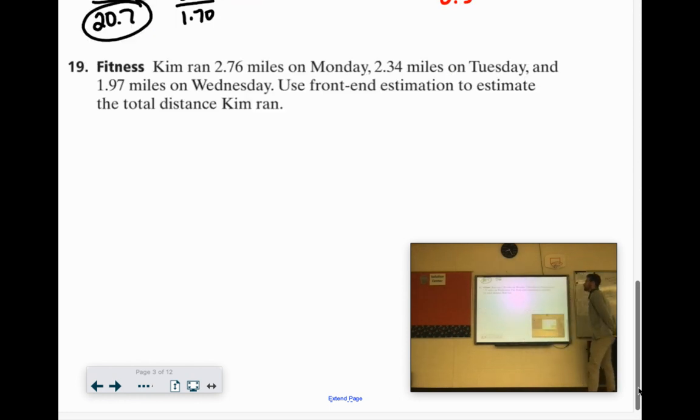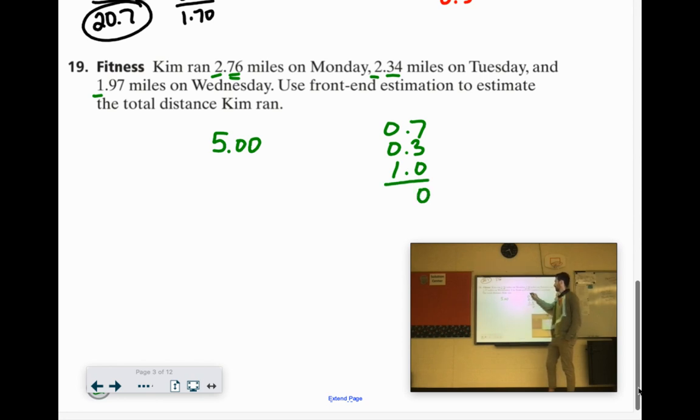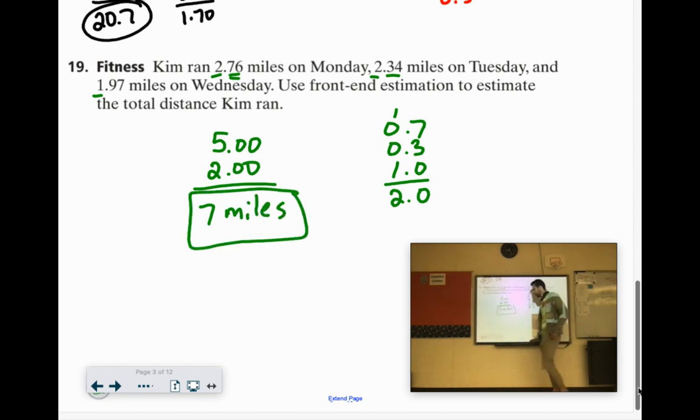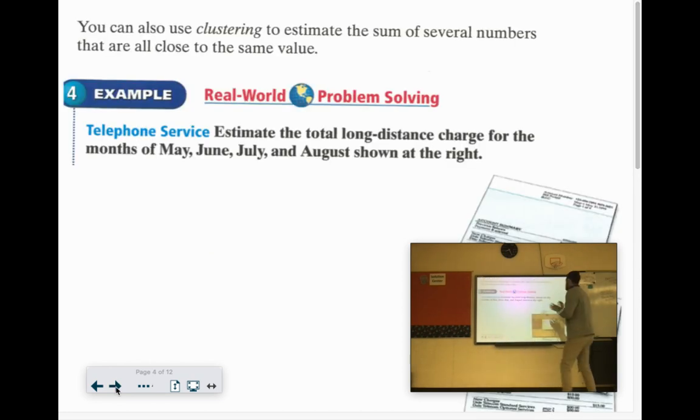The word problem. Kim ran 2.76 miles on Monday, 2.34 miles on Tuesday, and 1.97 miles on Wednesday. Use front end estimation to estimate the total distance Kim ran. So if we did the front digits, 2 plus 2 is 4 plus 1 is 5, so 5 miles. And then we'll get the back stuff. 0.76, let's call 0.7. 2.34, let's call it 0.3. And then 1.97, we'll call that one, right? 0.97 is pretty similar to like a whole dollar, 97 cents. So if we add these up, 7 plus 3 is 10. The 1, 1 plus 1 is 2. This comes out to about 2 more miles. So she ran about 7 miles. Way to go Kim.